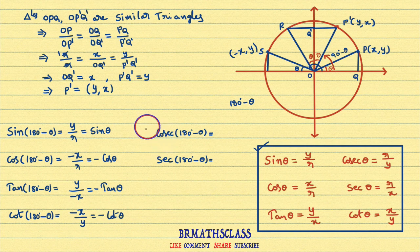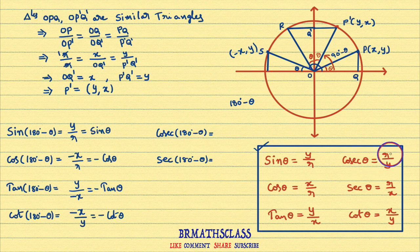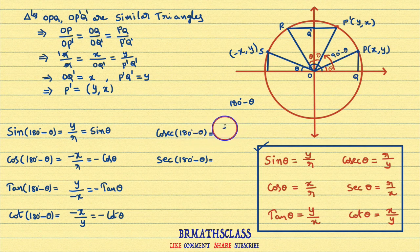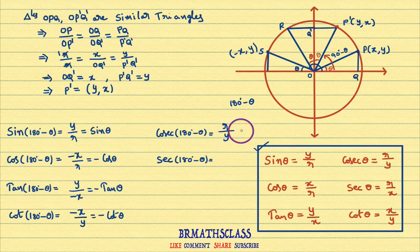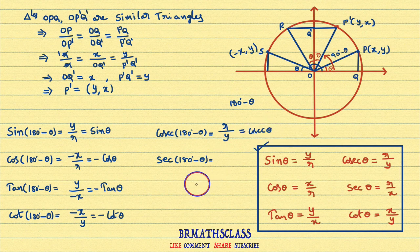Now we will see cosec(180 degrees minus theta). Cosec theta is defined as radius divided by y coordinate of the point. Cosec(180 degrees minus theta) means radius divided by y coordinate of S, which is y. Therefore, cosec(180 degrees minus theta) equals cosec theta.